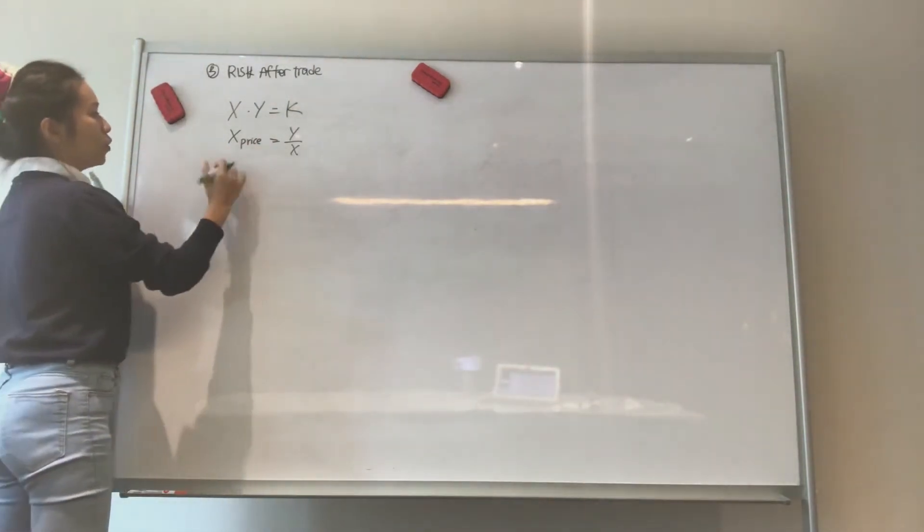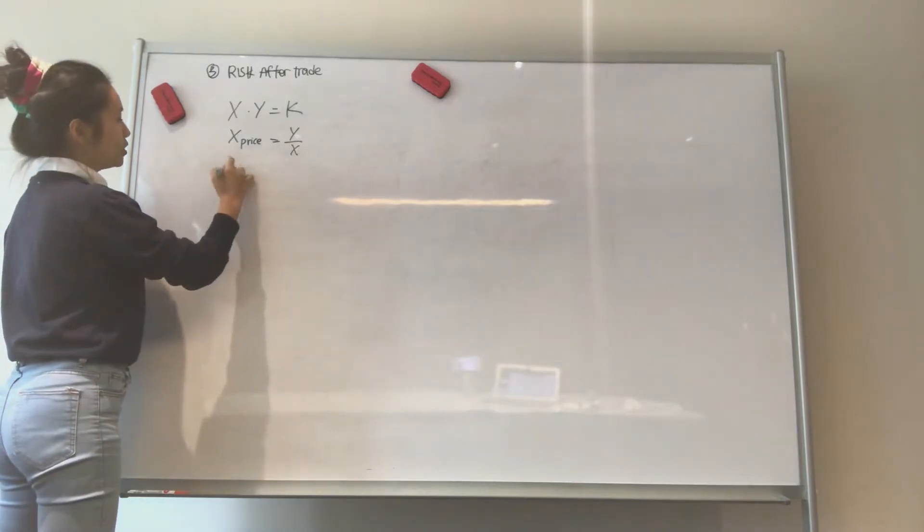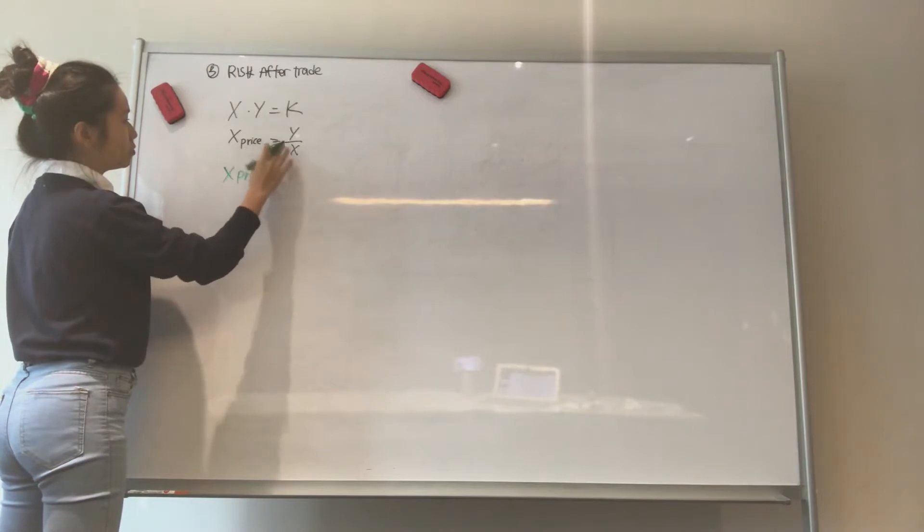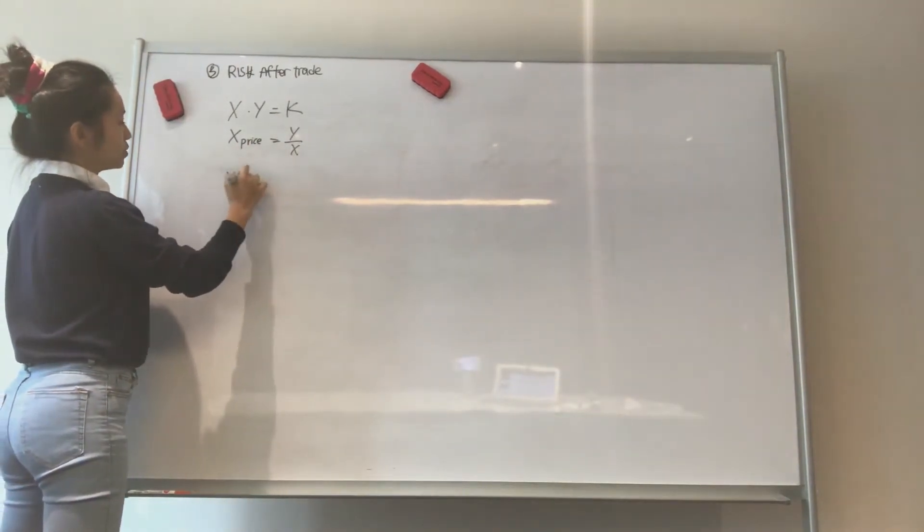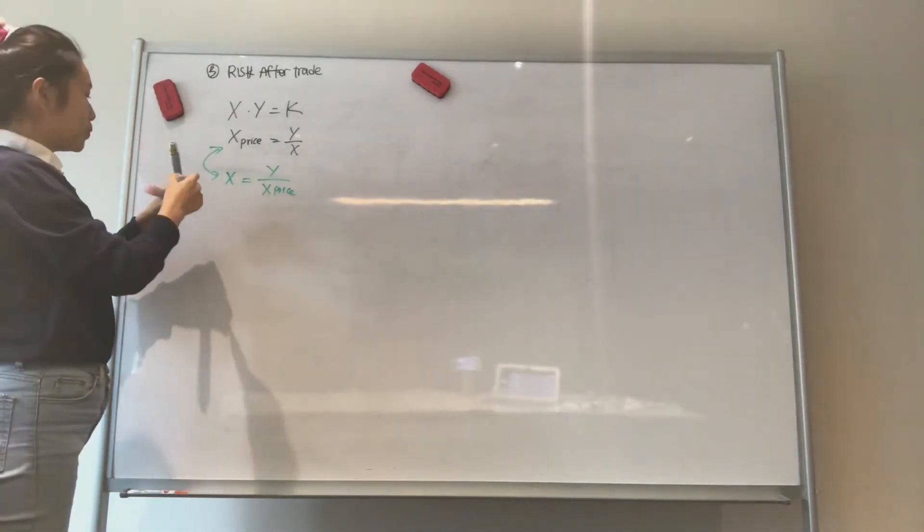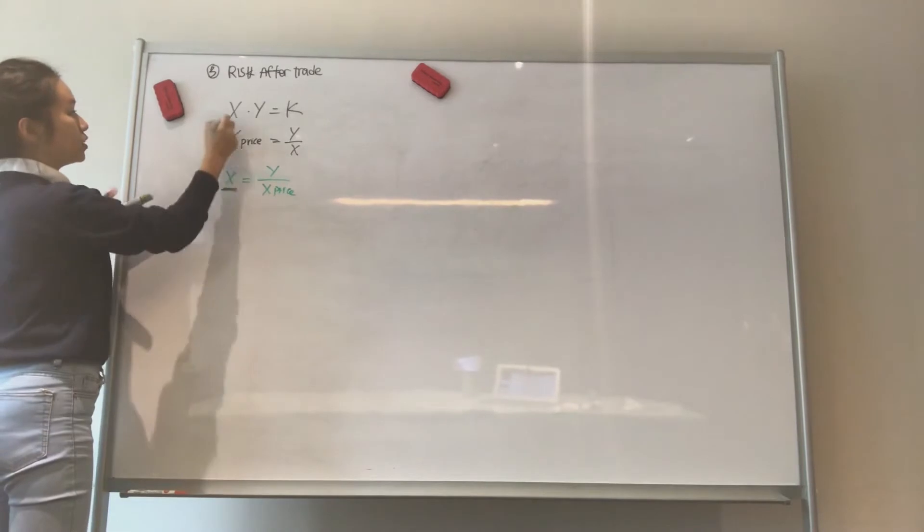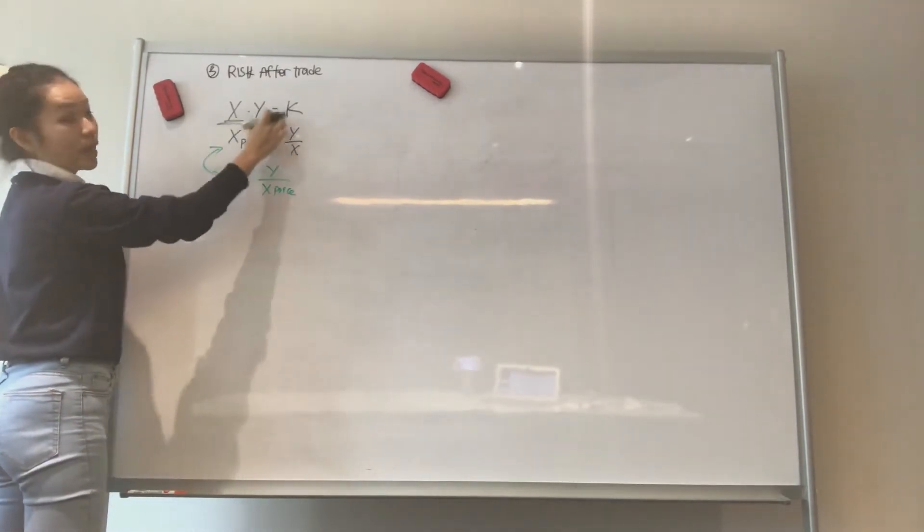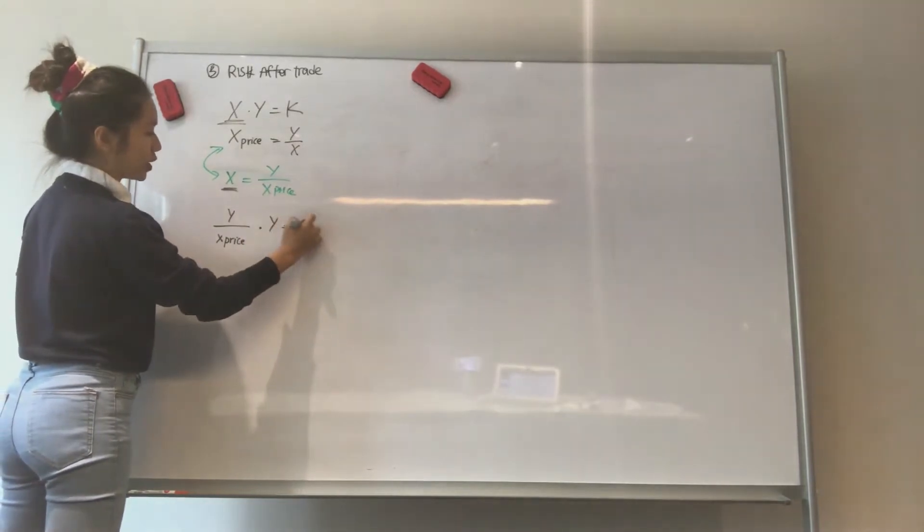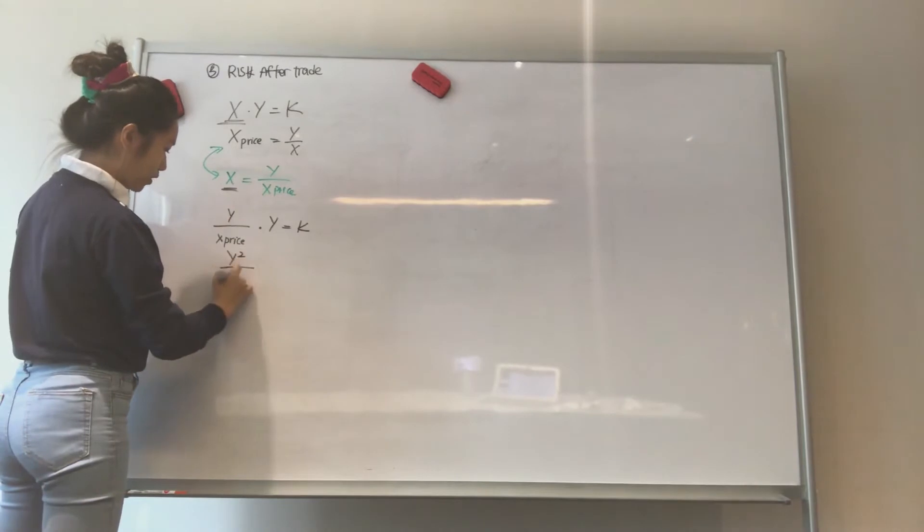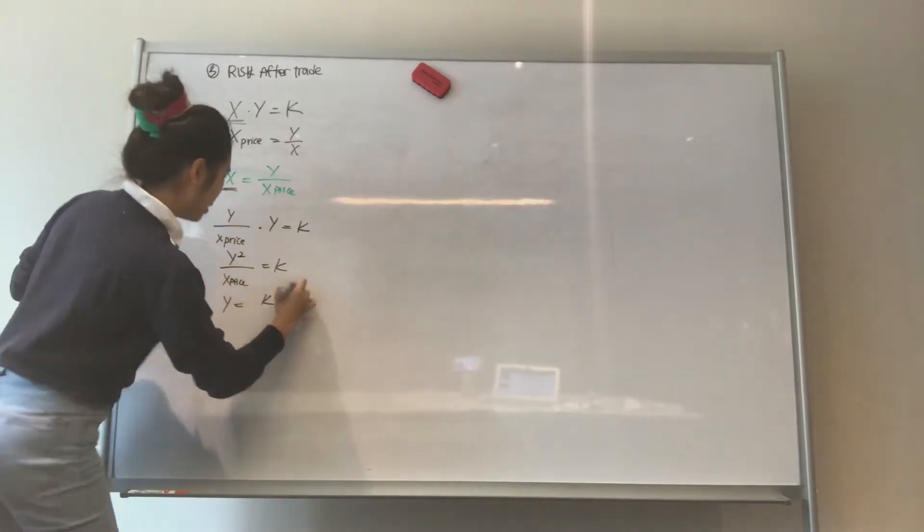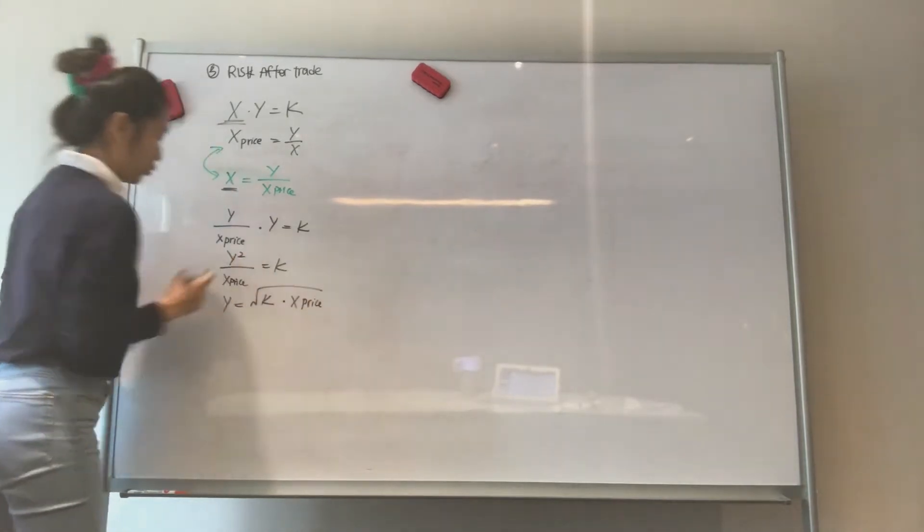So we rearrange this a little bit. So let's say x equals y over x price. These two are the same. So what we want to do now is substitute this x into x times y equals k. So we know x is also y over x price. Multiply by y, you get k. So y squared over x price equals k. And y equals k multiplied by x price. And then you just square root the whole thing. So this is the value of y.